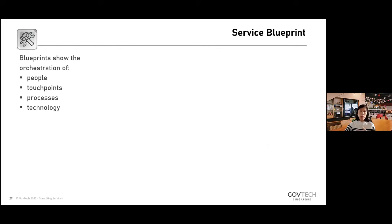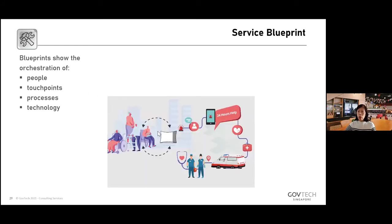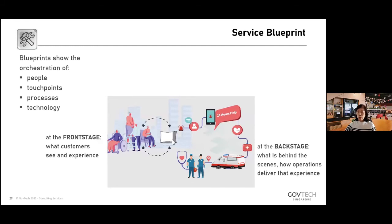The next tool is the service blueprint. In service design, a service blueprint is one of the best tools for capturing who are the people involved, what are the touch points, what processes and technology are involved, and importantly, what's happening on the front stage — what customers see and experience — versus the backstage, what happens behind the scenes to deliver that experience. For instance, the Pillow Pal triggers help on the front stage, but what happens at the backstage when that help is triggered? If you think about the work you do, a client may just be seeing a caseworker, but behind the scenes there is so much more.